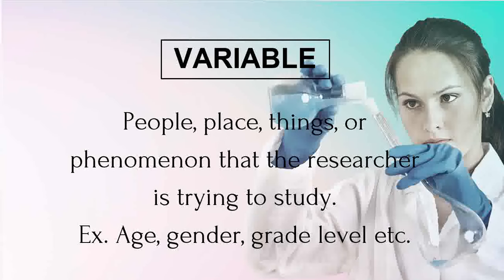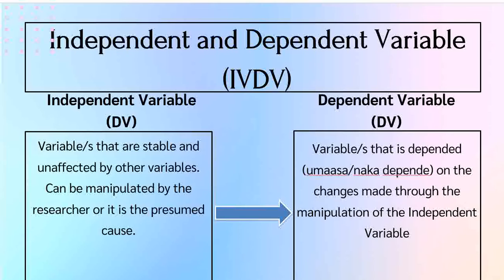Let's look at the definition in our slide. When we say independent variable, these are variables that are stable and unaffected by any other variable. Ibig sabihin, they can stand alone — hindi sila naapektuhan. Dahil nga kapag sinabi nating independent variable, ito yung mga bagay o mga tao, datos na pag-aaralan natin o ima-manipulate natin, iimbestigahan natin sa ating research.